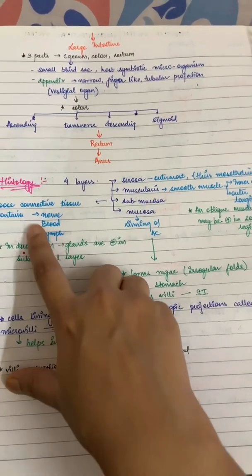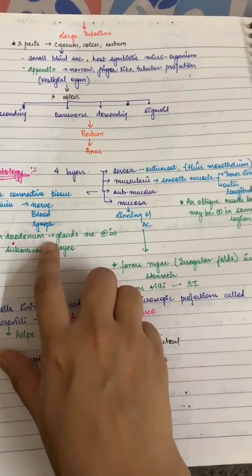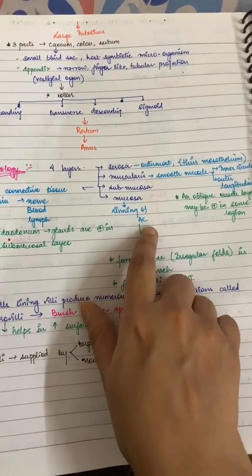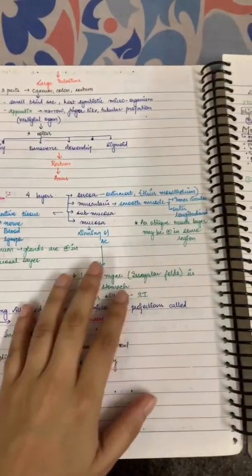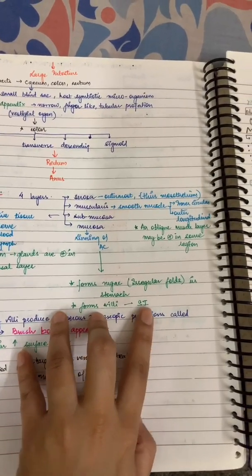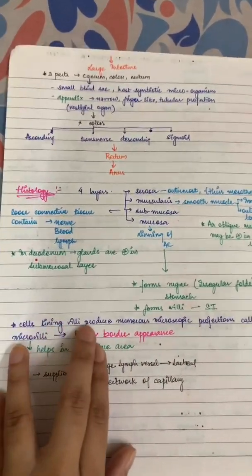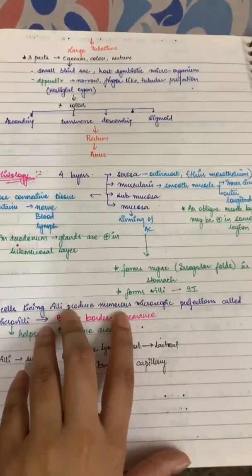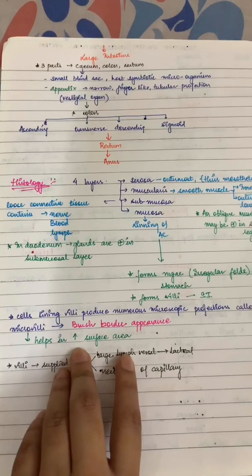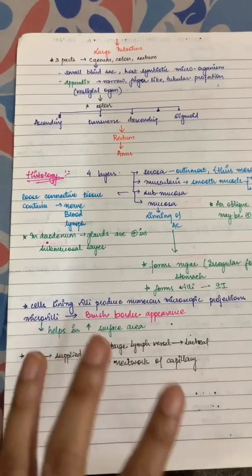The innermost layer is the mucosa, which is the lining of the alimentary canal. The mucosa is modified into rugae — irregular folds in the stomach — and into villi in the small intestine, providing more surface projections. The cells lining the villi produce numerous microscopic projections called microvilli, which give a brush border appearance. This greatly increases the surface area, which is important for absorption through active, passive, facilitated transport, diffusion, and osmotic gradient.